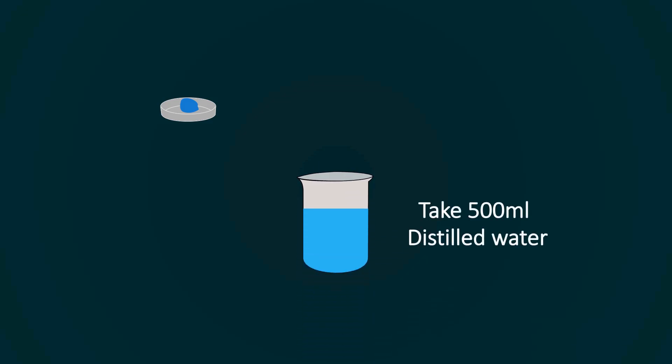Now take 500 milliliters of distilled water into a beaker and put the measured chemical into the beaker. Make sure to make it homogeneous with the help of a stirrer.